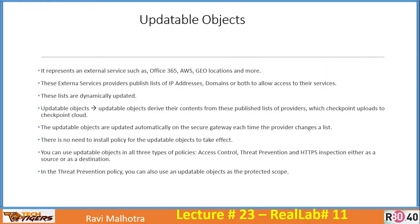Updatable objects represent external services such as Office 365, AWS, geolocations of specific countries like China, Zoom, Okta, SharePoint, Microsoft Intune, and many other online services. You cannot predict their IP addresses because they keep changing them and keep adding more services to their portfolio.